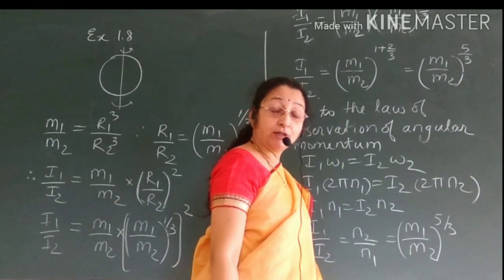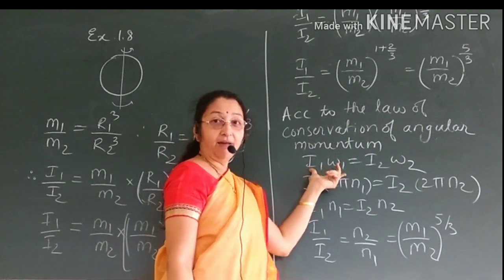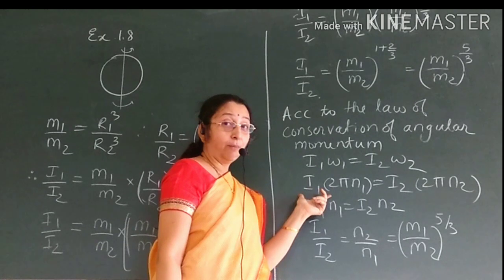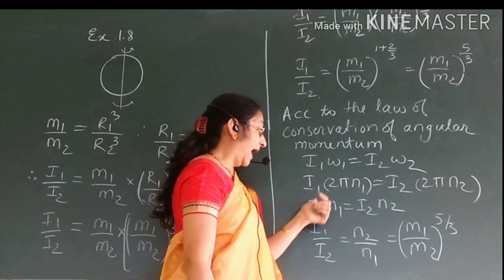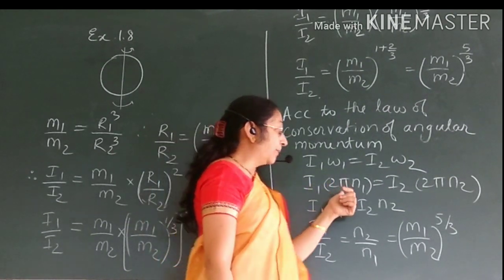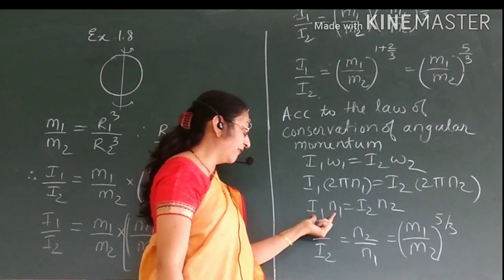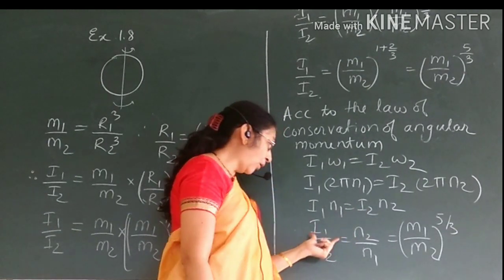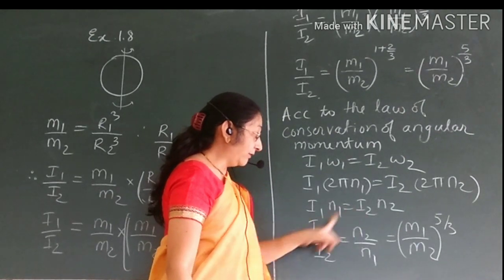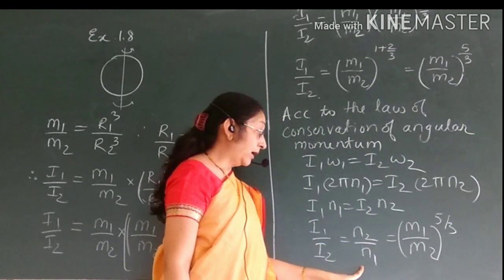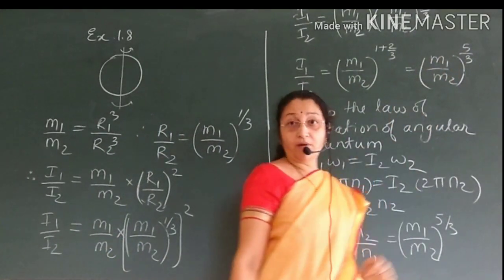According to the law of conservation of angular momentum, I1 ω1 equals I2 ω2. Since ω equals 2π n, we get I1 times 2π n1 equals I2 times 2π n2. Canceling the 2π from both sides, we get I1 n1 equals I2 n2. Therefore I1 upon I2 equals n2 upon n1.